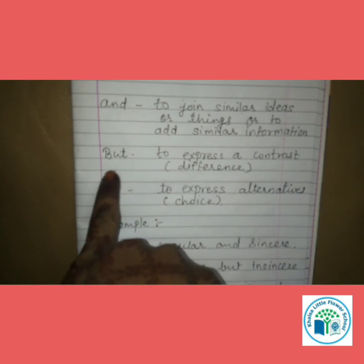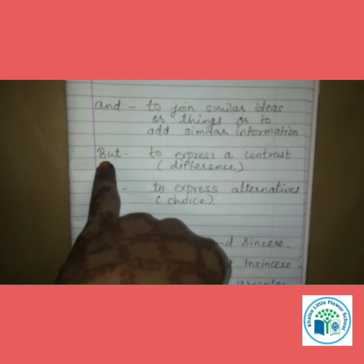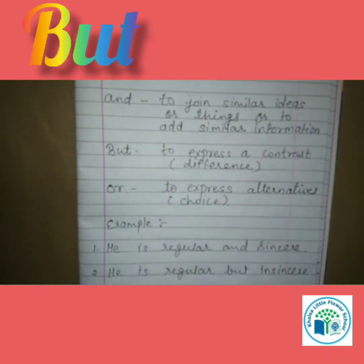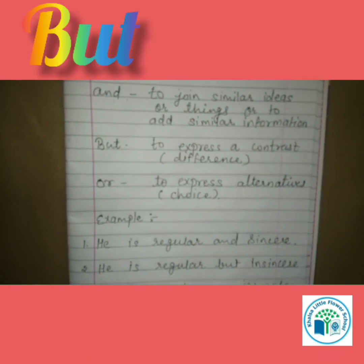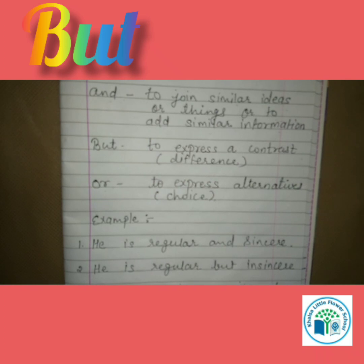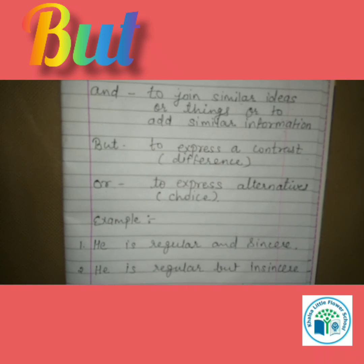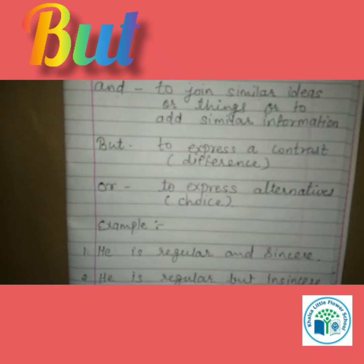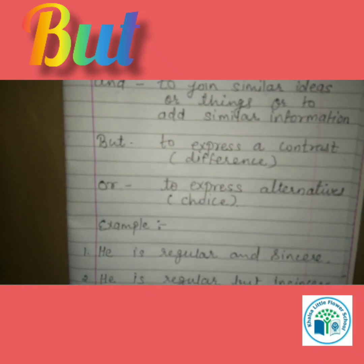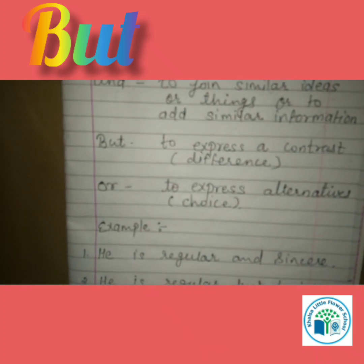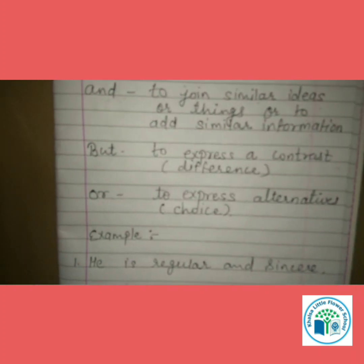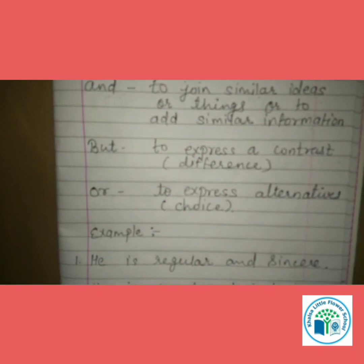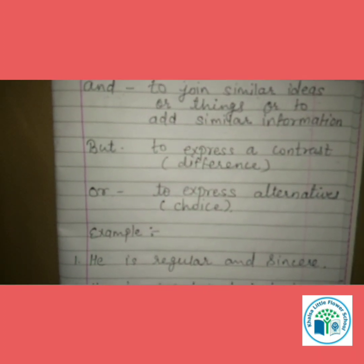The second Conjunction is 'but'. 'But' is used to express a contrast. For example, Sunil hai woh tall hai, but Rahul is short. In dono mein difference hai — Sunil is tall, but Rahul is short.